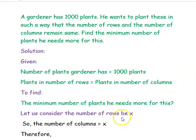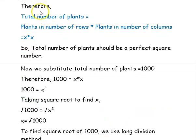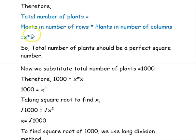Let us consider the number of rows to be x. Since plants in number of rows equals plants in number of columns, if we have taken x number of rows, the number of columns should also be x. Therefore, the total number of plants equals plants in number of rows multiplied by plants in number of columns, which is x into x. So the total number of plants should be a perfect square number.